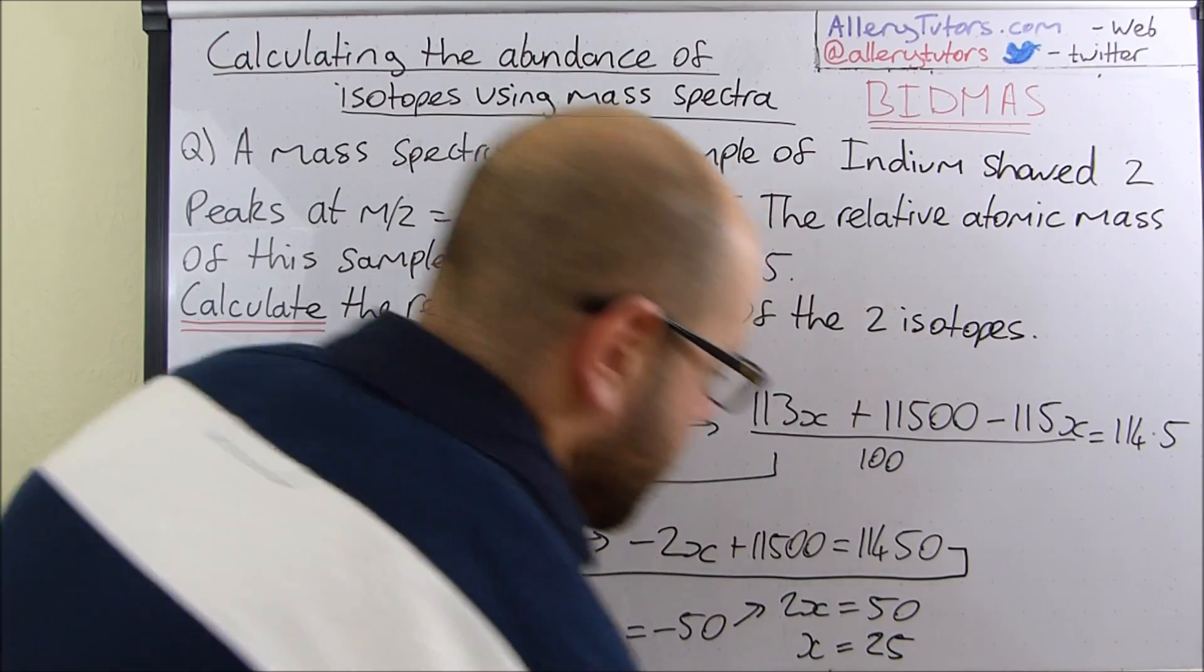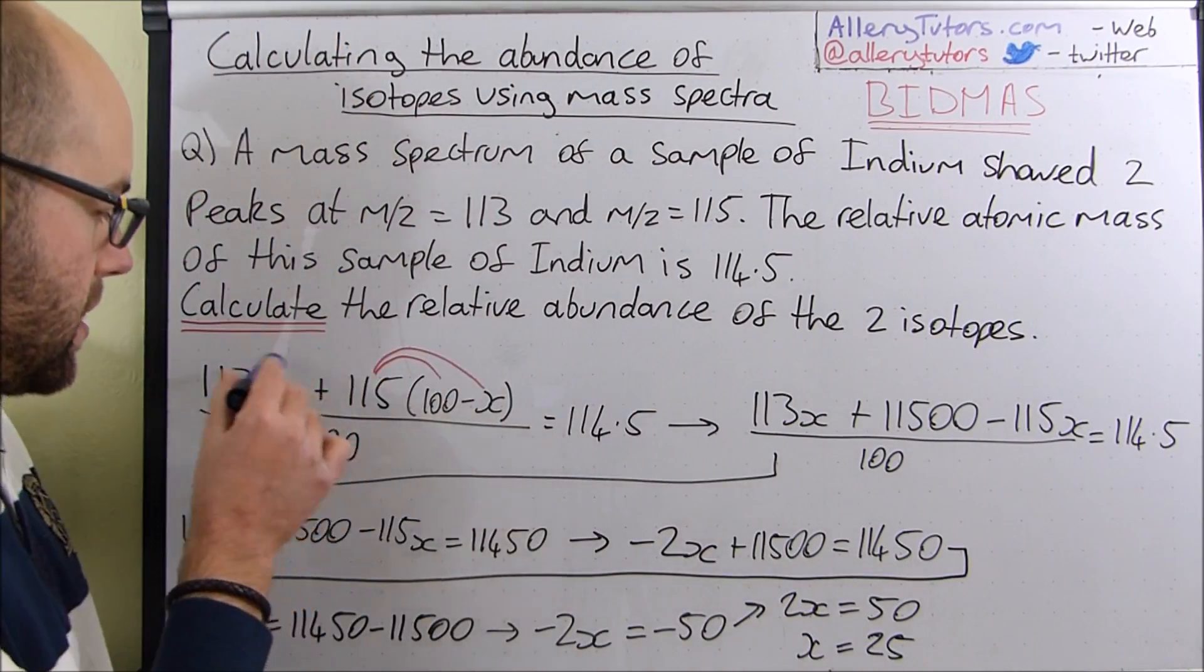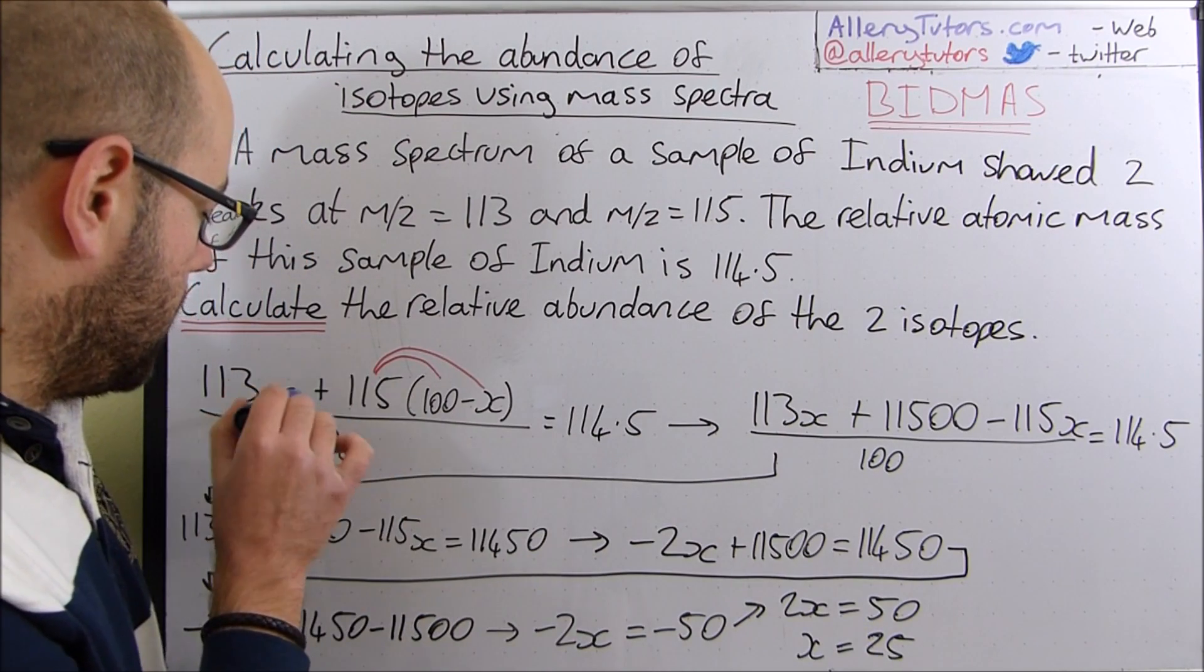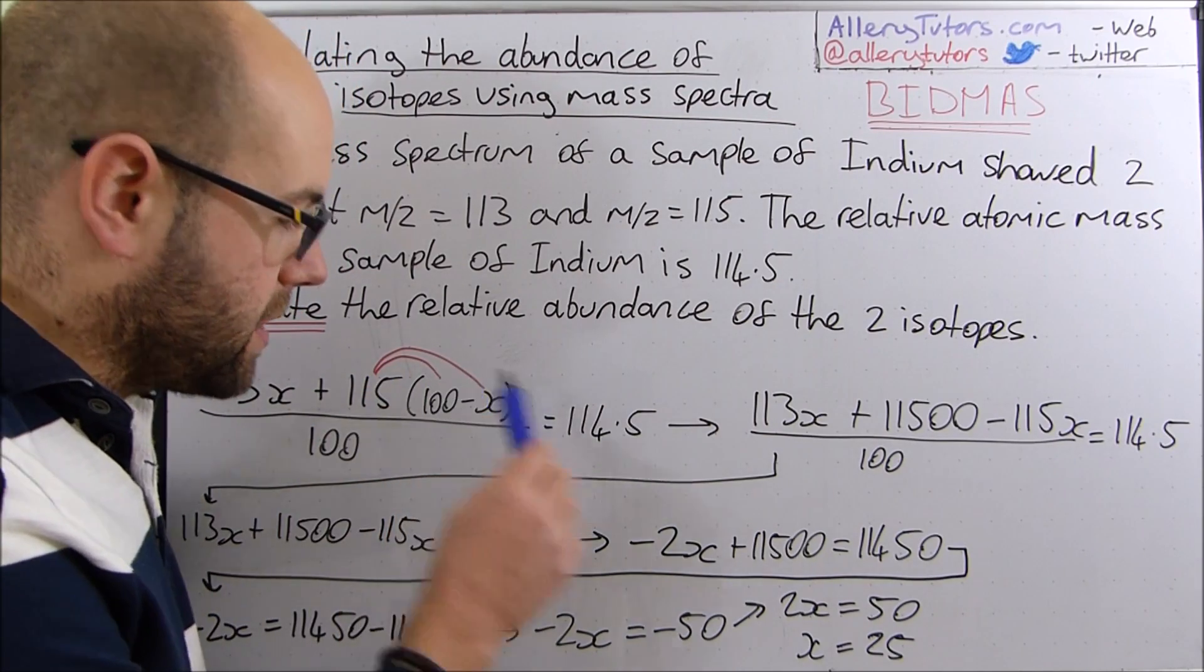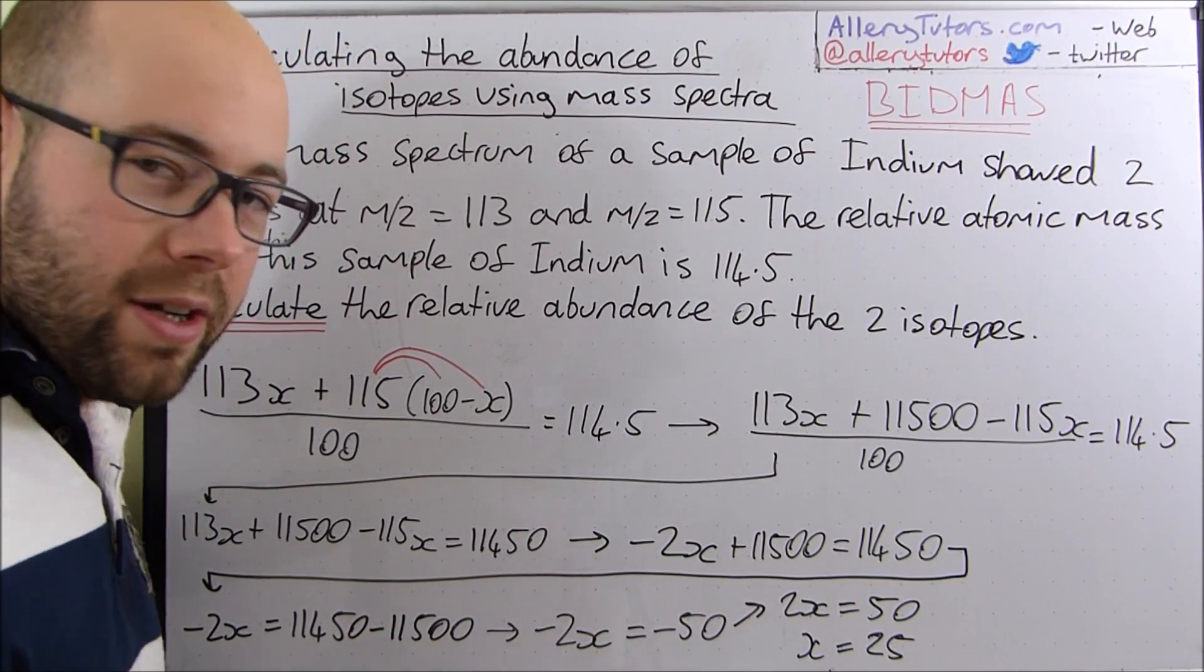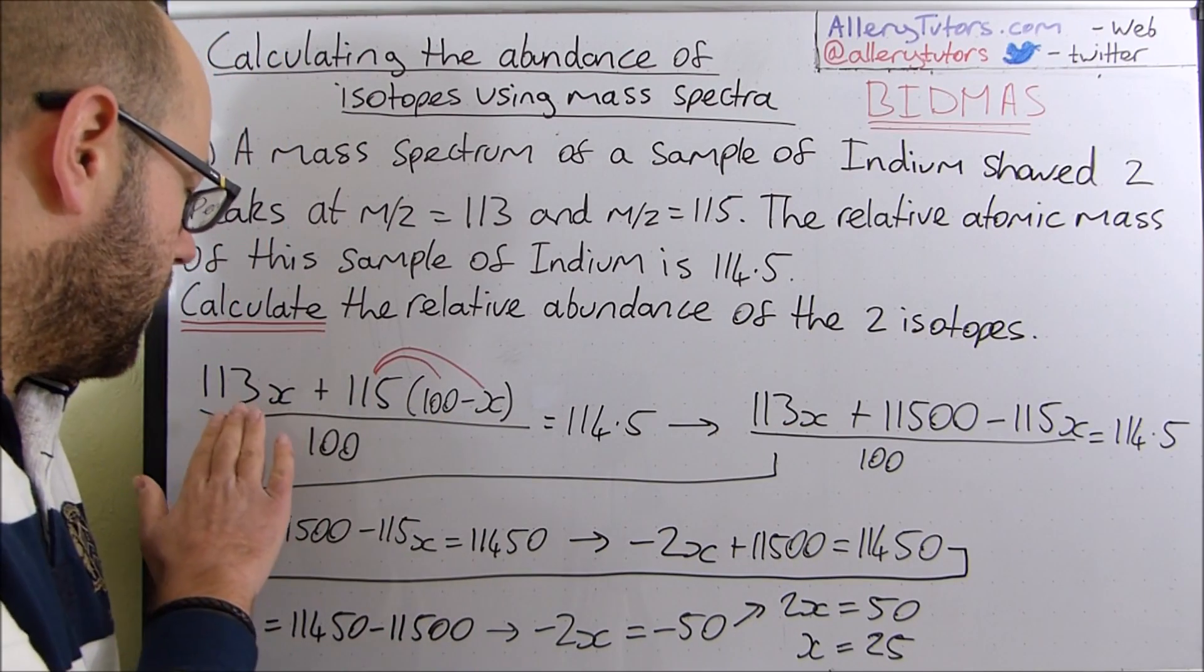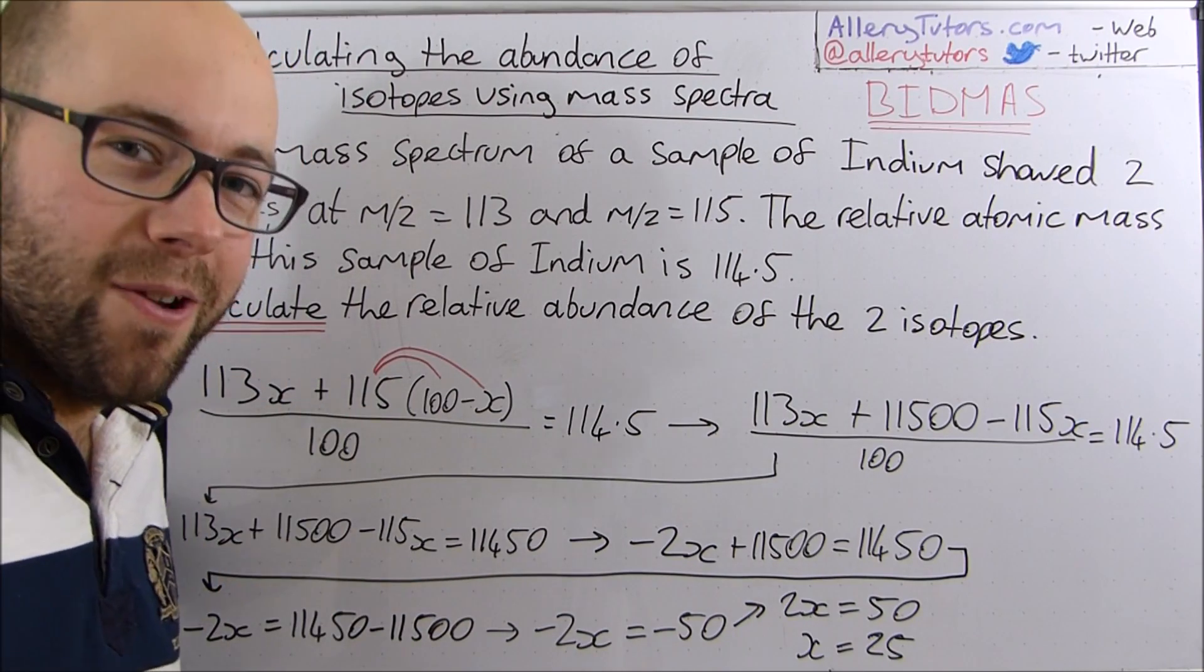So this number X would fit into here. The isotope which had 113 actually has an abundance of 25 because that's the value of X, and the isotope of 115 has the value of 100 minus X which is going to be 75 because X holds the value of 25. So we've worked out the percentage abundance of each isotope. We've got 25% at 113 and 75% at 115.